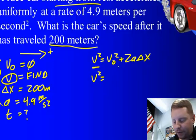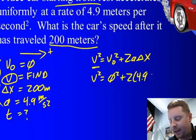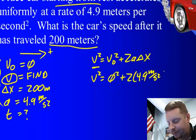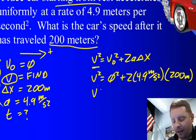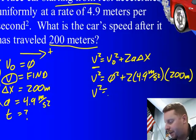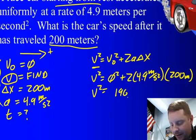We'll substitute in with units. v² equals v-naught squared, that's zero squared, plus 2 times a, 4.9 meters per second squared, times our displacement, 200 meters. Or, with a little calculator work,